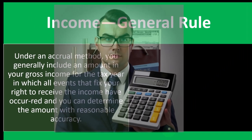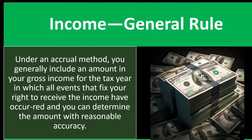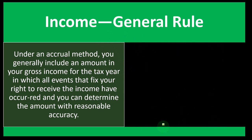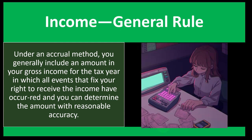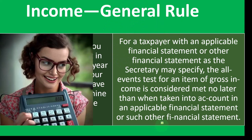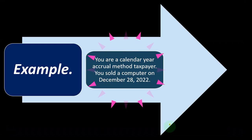Income general rule: under an accrual method, you generally include an amount in gross income for the tax year in which all events that fix your right to receive the income have occurred and you can determine the amount with reasonable accuracy. You've basically earned the income and can determine how much. Typically in bookkeeping, you'd issue an invoice — increasing accounts receivable with the other side going to revenue. For taxpayers with an applicable financial statement, the all events test is met no later than when the income is taken into account in that financial statement.